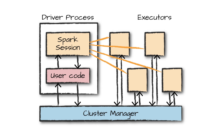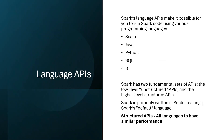Now let's look into a few more things in a bit of detail. First, let's talk about language APIs. When we talk about Spark, what are the different languages that we can use to write Spark code? Spark itself has been written in Scala, but when it comes to language APIs we can use to run Spark code, many languages are supported: Scala, Java, Python, SQL, and R.